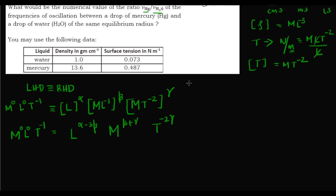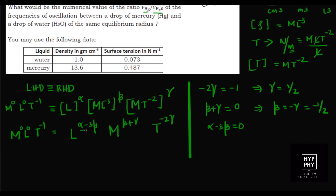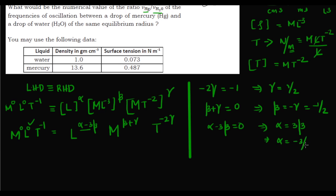From T: −2γ = −1, so γ = 1/2. From M: β + γ = 0, so β = −1/2. From L: α − 3β = 0, so α = 3β = −3/2. We now have all the exponents: α = −3/2, β = −1/2, γ = 1/2.